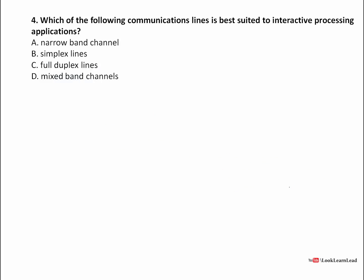Which of the following communications is best suited for interactive processing applications? It is obviously full duplex. Interactive applications require interaction between nodes — if there is node 1 and node 2, they must be able to communicate simultaneously. This type of communication is only possible with full duplex lines. The answer is full duplex.